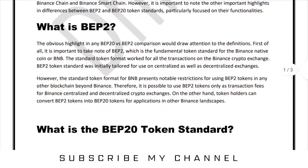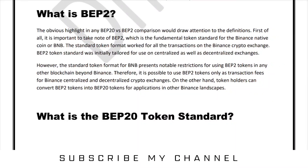What is BEP2? The obvious highlight in any BEP20 versus BEP2 comparison would draw attention to the definition. First of all, it is important to note BEP2, which is the fundamental token standard of the Binance native coin, or BNB. The token format works for all transactions on the Binance crypto exchange. However, the token format for BNB presents notable restrictions for using BEP2 tokens on any other blockchain beyond Binance. Therefore, it is possible to use BEP2 tokens only as a transaction fee for Binance centralized and decentralized crypto exchanges.